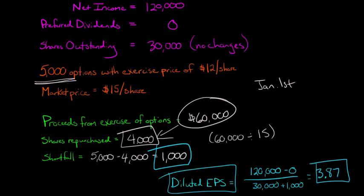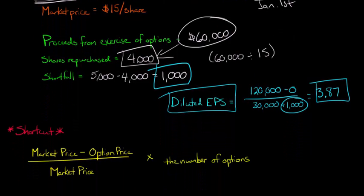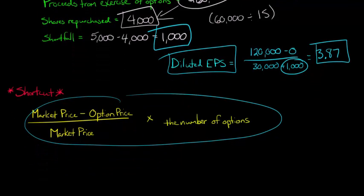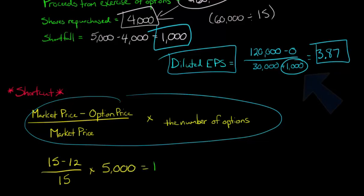Now there's a faster way to get to this 1,000. I want to show you a little shortcut here. If you use this formula where you take the market price, that $15, and then subtract out the option price, the exercise price, the $12, and then divide that by 15 and multiply by the number of options, which in our case was 5,000, that will give you that 1,000.